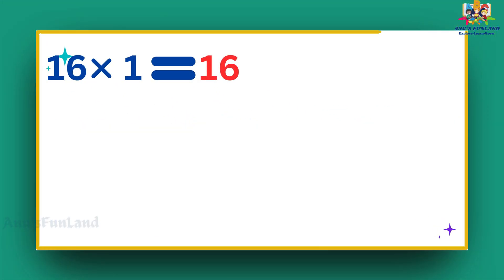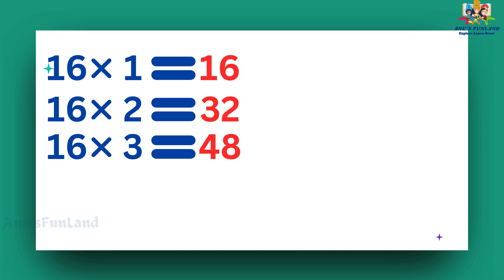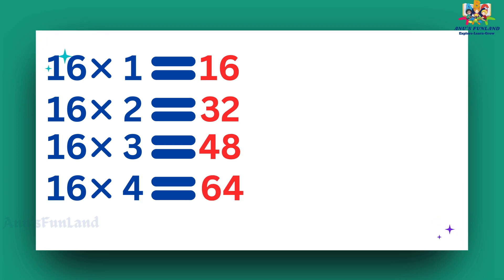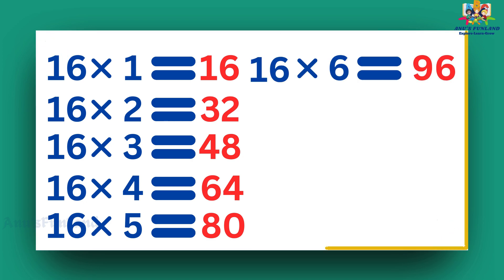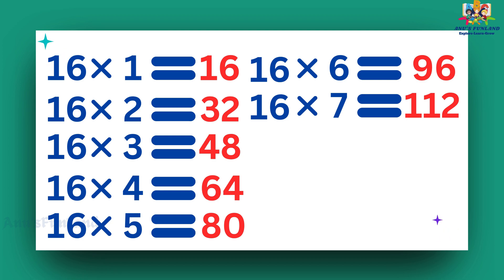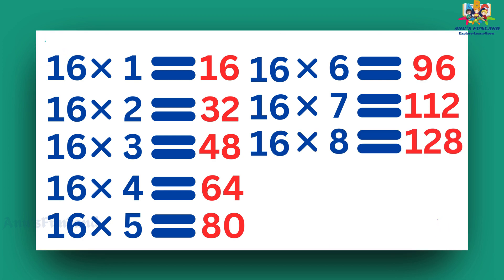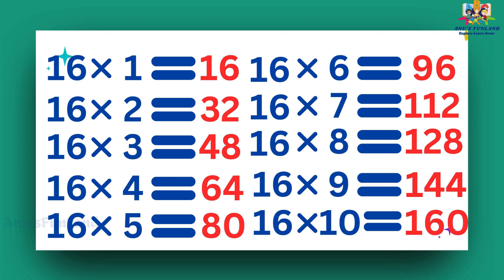16 ones are 16. 16 twos are 32. 16 threes are 48. 16 fours are 64. 16 fives are 80. 16 sixes are 96. 16 sevens are 112. 16 eights are 128. 16 nines are 144. 16 tens are 160.